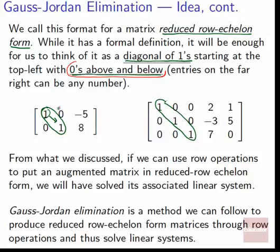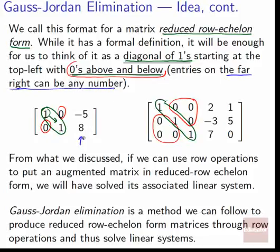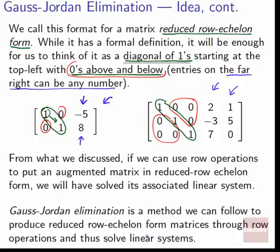So we've got ones along the main diagonal, zeros above and below, and the numbers on the far right can be anything. If we can use row operations to put an augmented matrix in reduced row echelon form, we'll have solved its associated linear system — because with only one variable per row, each variable must equal the constant on the right side past the vertical line.